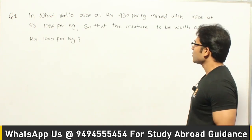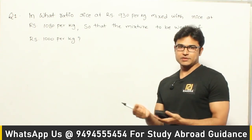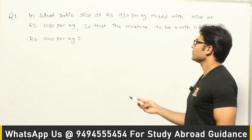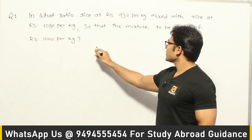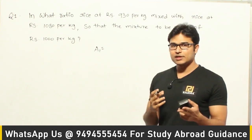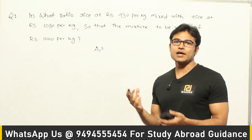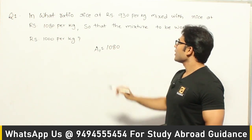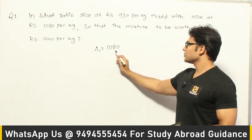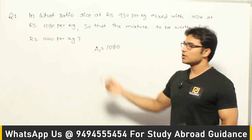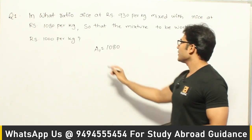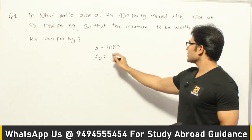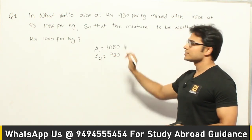We are going to mix two mixtures and change the average of the mixture. By convention, we take A1 to be the mixture with the higher average. So A1 is the rice with average cost 1080 rupees per kg, and A2 is the rice with average cost 930 rupees per kg.